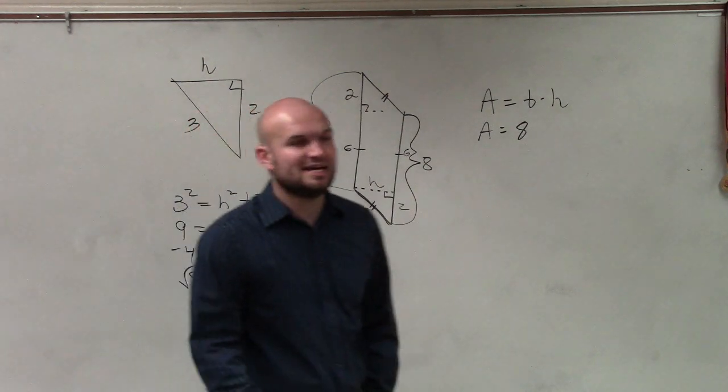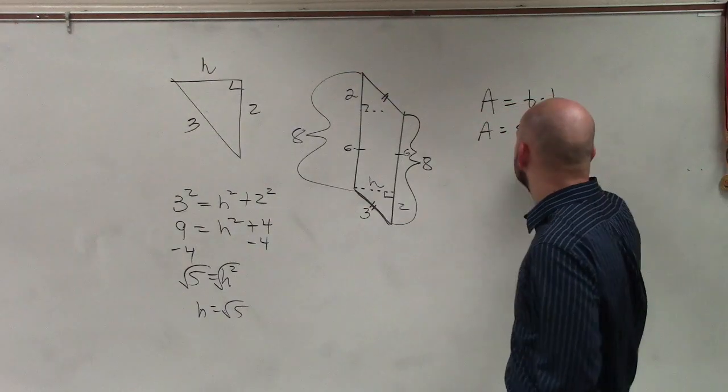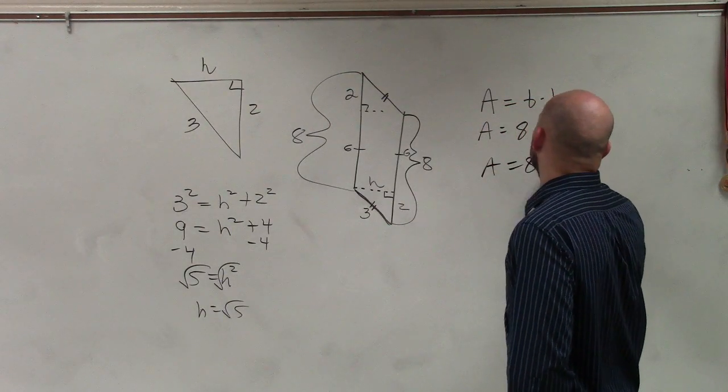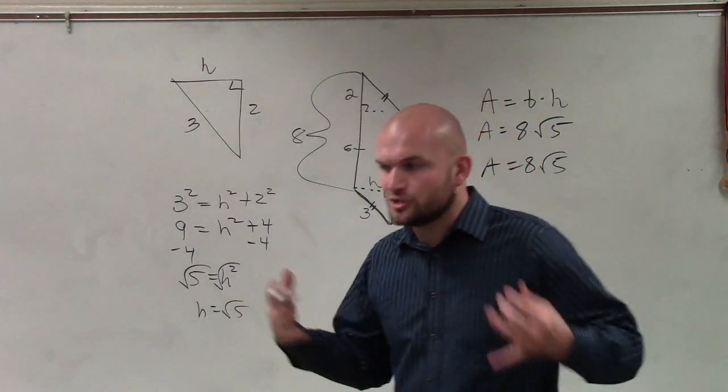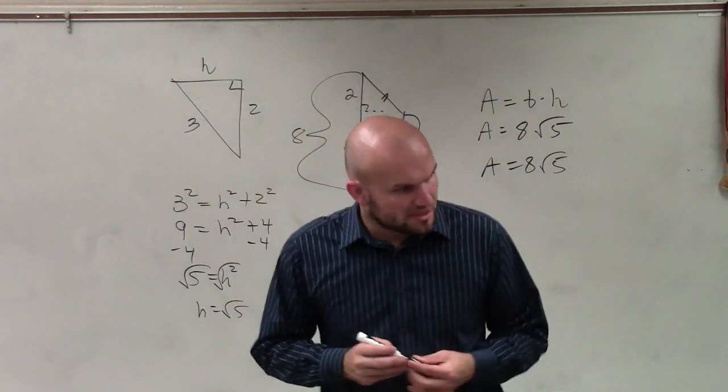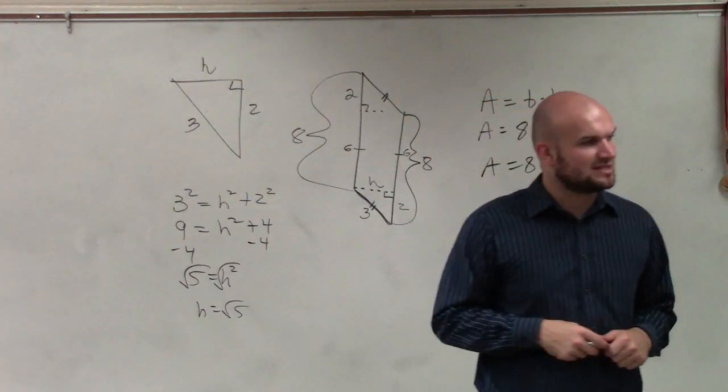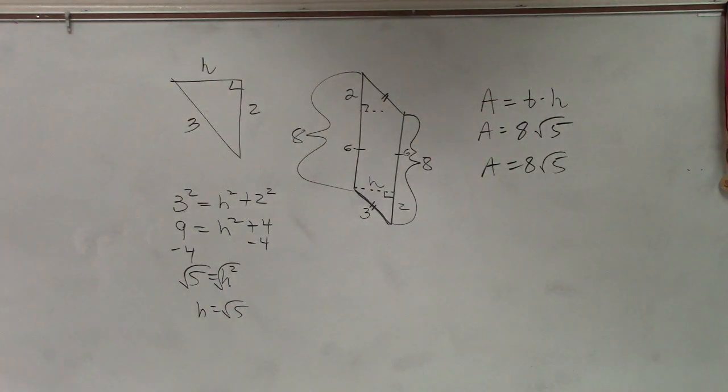So, we can call h the square root of five. And we'll leave it as an exact answer unless they're asking us to find it in decimal form, then we'd use our calculator. But just right now, I'll just leave it as an exact answer. Does that make sense? Do you guys see how we find the dimensions of the height and the base to make these problems?